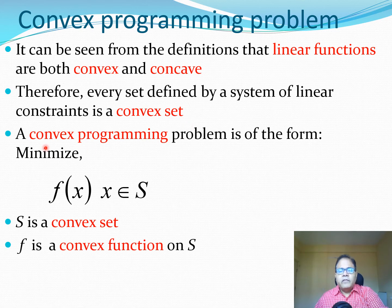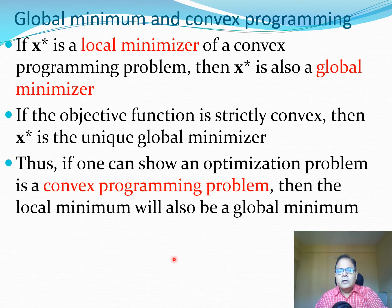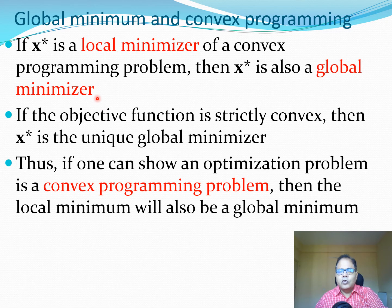Now we can define the convex programming problem. It essentially involves minimizing a function f(x) where x lies within a set S, S is a convex set, and f is a convex function. If you can identify such a function and set, this optimization problem has important features. Specifically, if x* is the local minimizer of a convex programming problem, then x* is also a global minimizer — once you have a convex programming problem, any local minimum is guaranteed to be the global minimum.